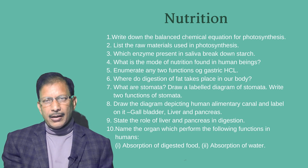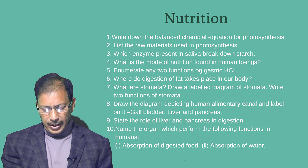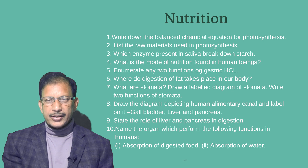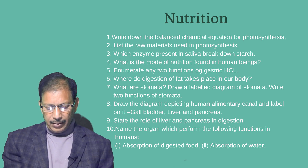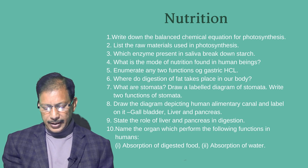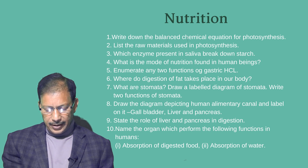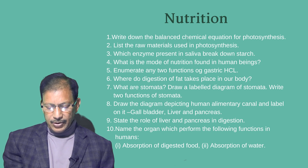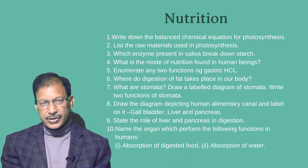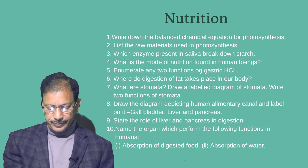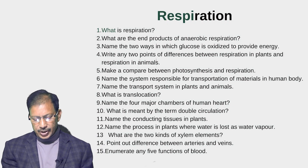Where does digestion of fats take place in our body? What are stomata — draw a labelled diagram of stomata and write two functions. Draw the diagram depicting the human alimentary canal and label the gallbladder, liver, and pancreas. State the role of liver and pancreas in digestion. Name the organs which perform absorption of digested food, absorption of water.